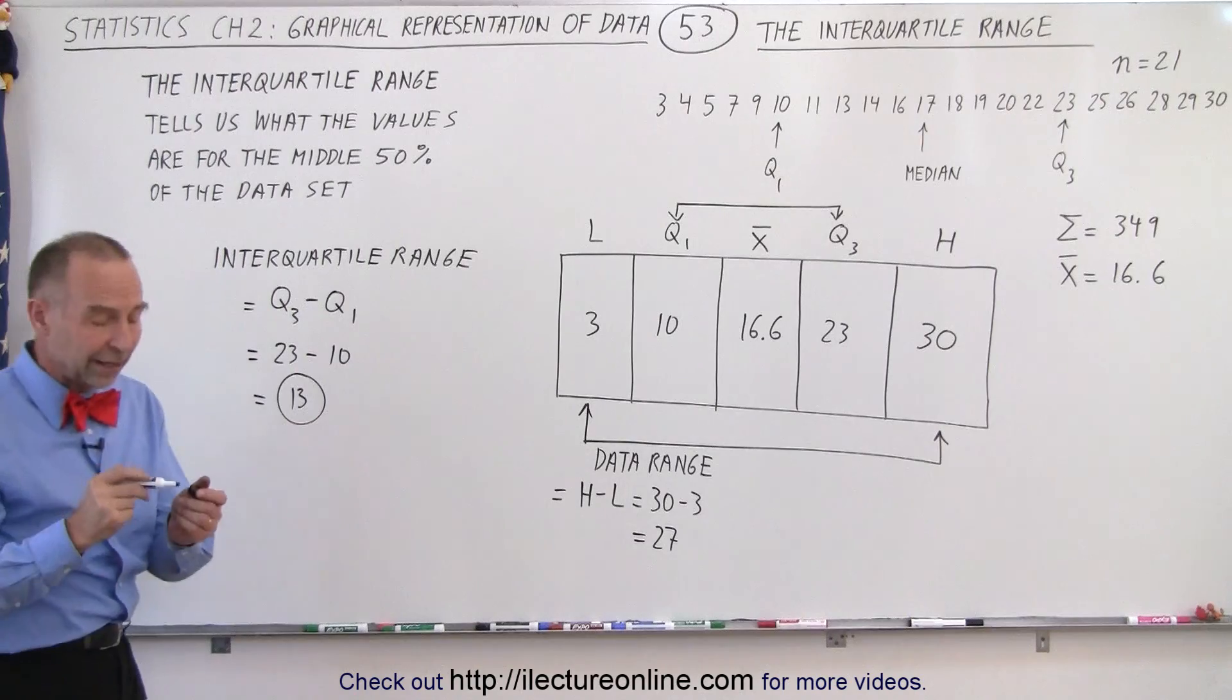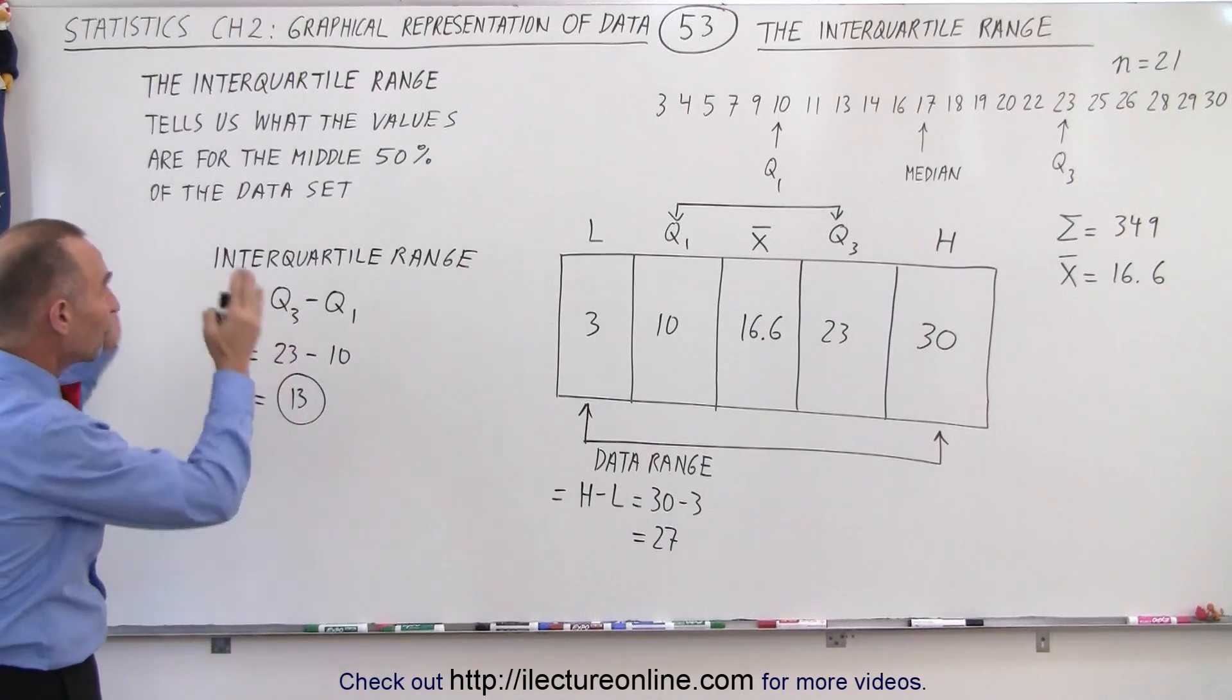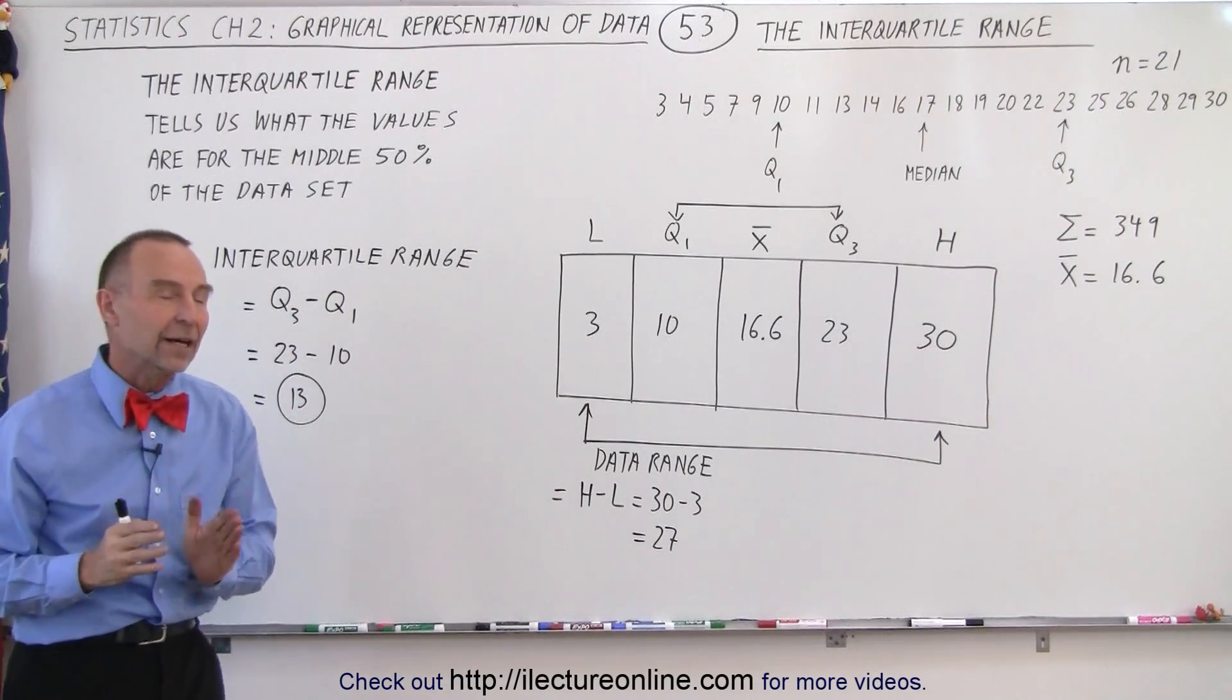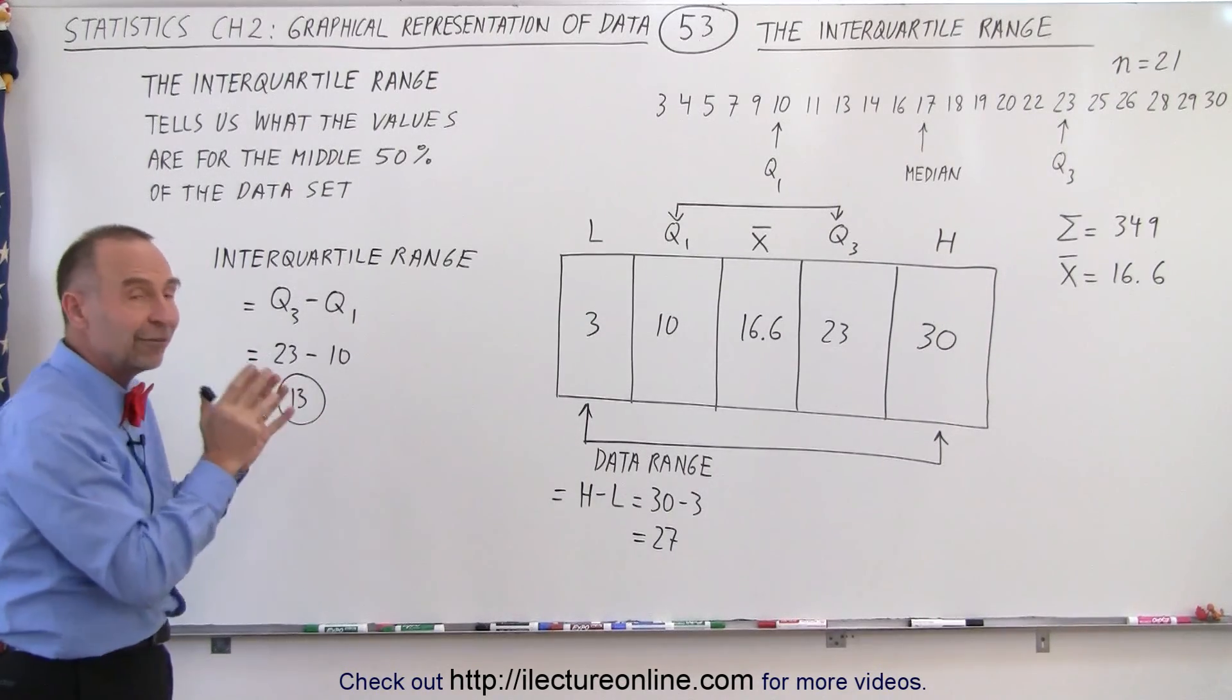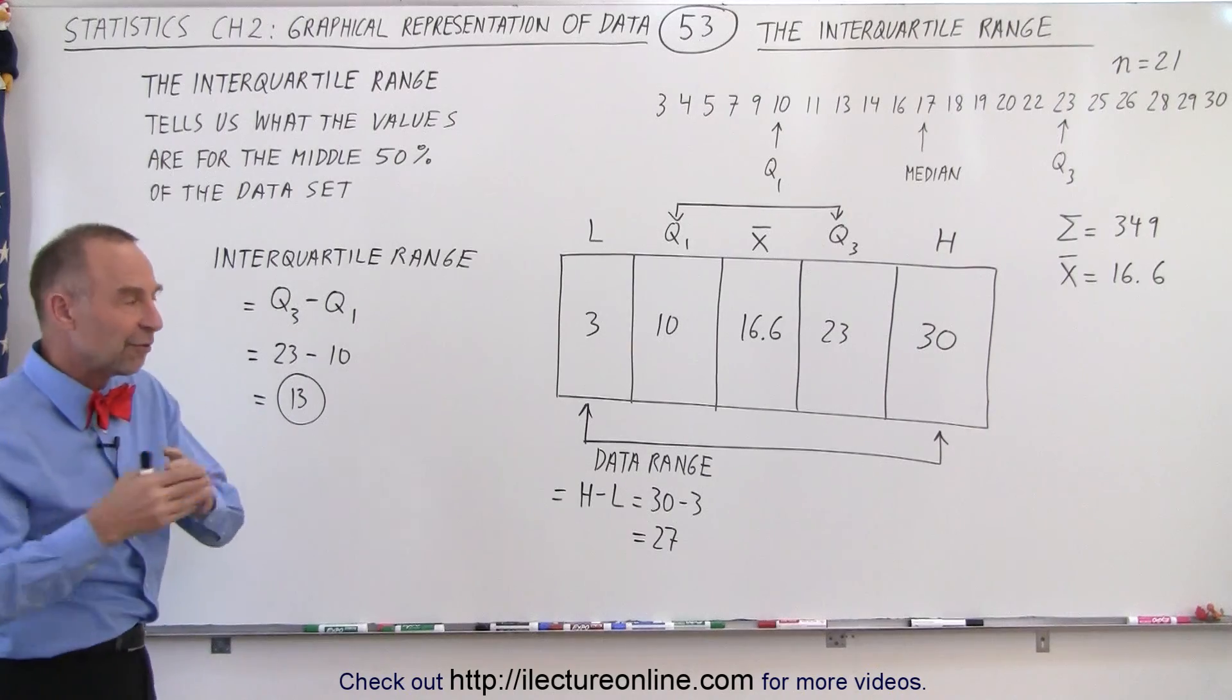Now what does that tell us? That tells us that the data range of the middle 50% of all the data is equal to 13. It tells you how far apart the data is for the middle 50% or the middle half of all the data points.